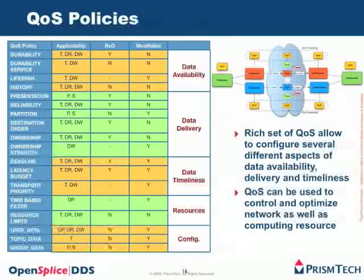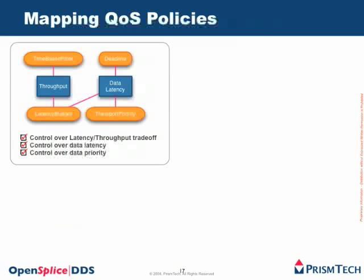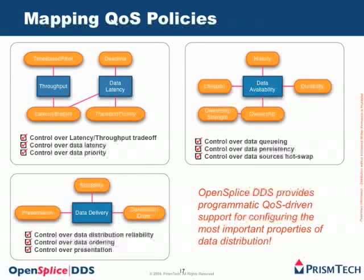DDS provides a wide set of QoS services that control data availability, data delivery, data timeliness, resource and configuration. I will have a podcast specifically on QoS, but what matters right now is that you can control throughput and data latency by means of QoS settings — there are four of those that help you. You can control data availability in your application with five QoS policies, and you can control data delivery with three QoS policies.